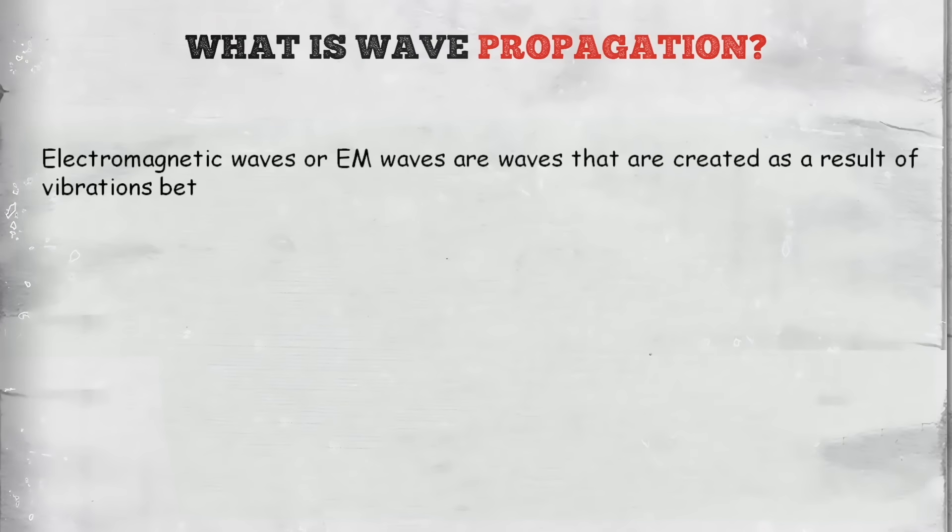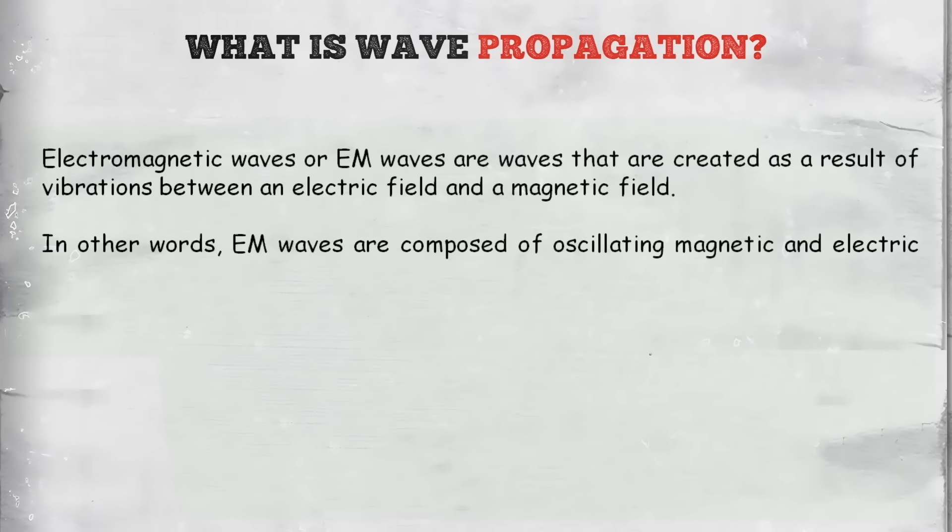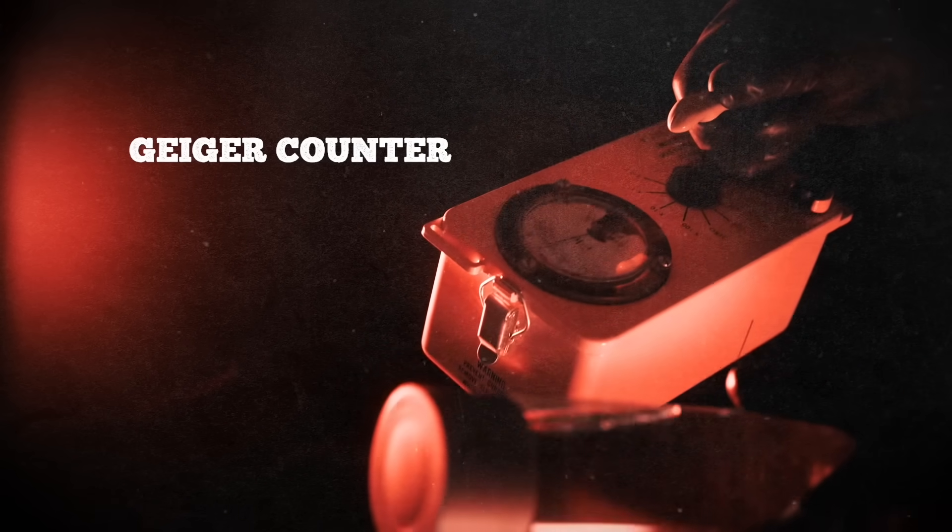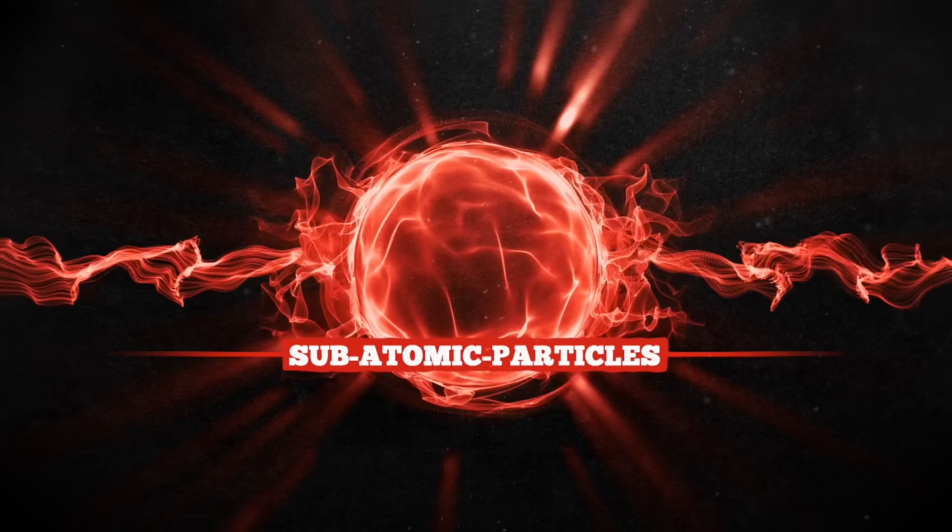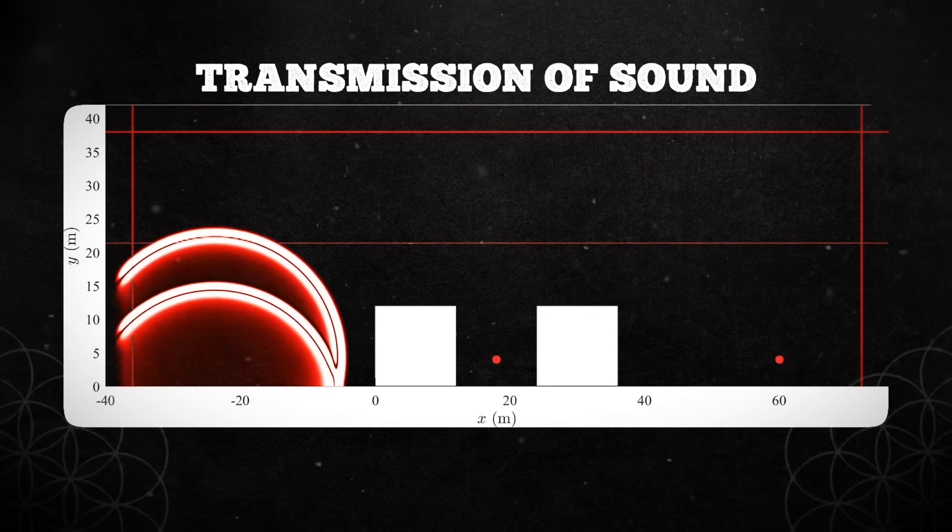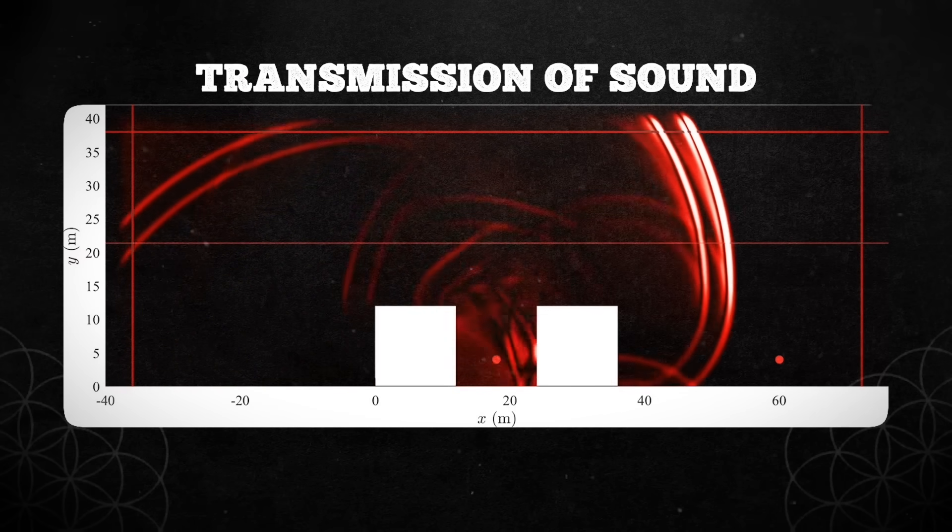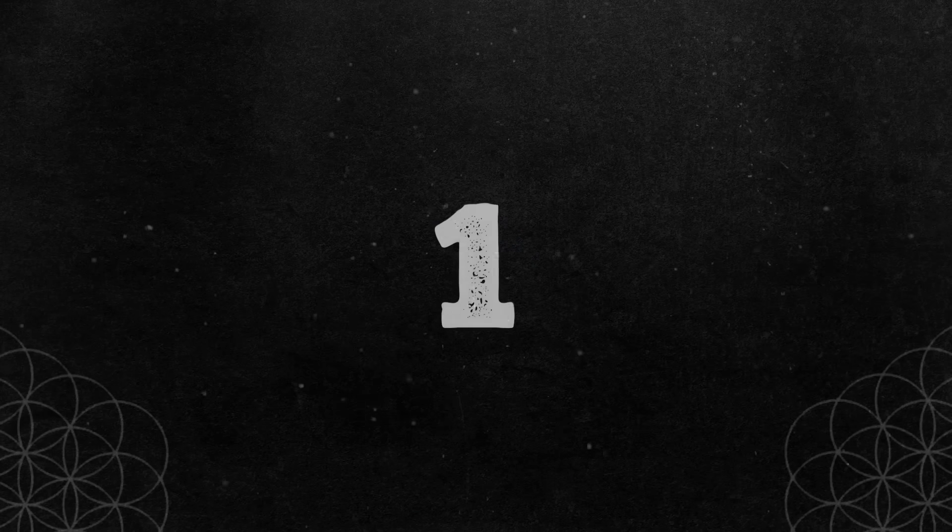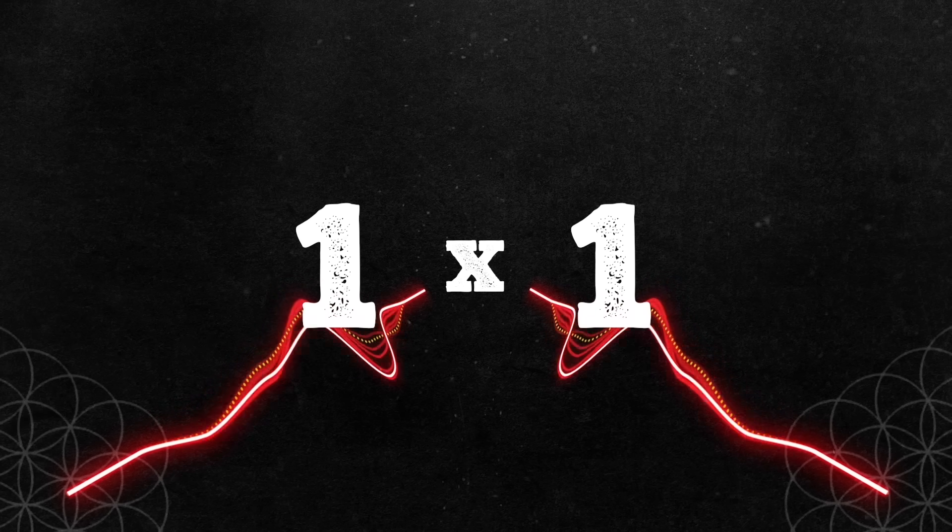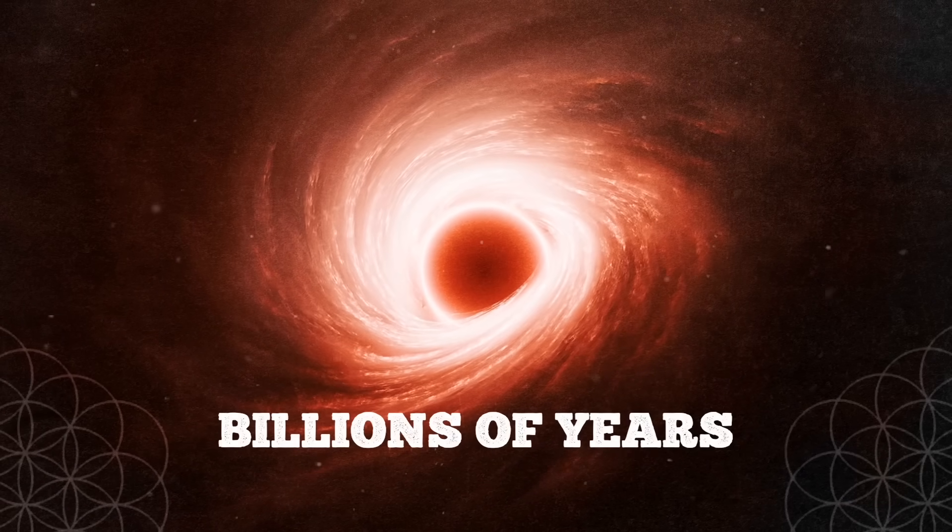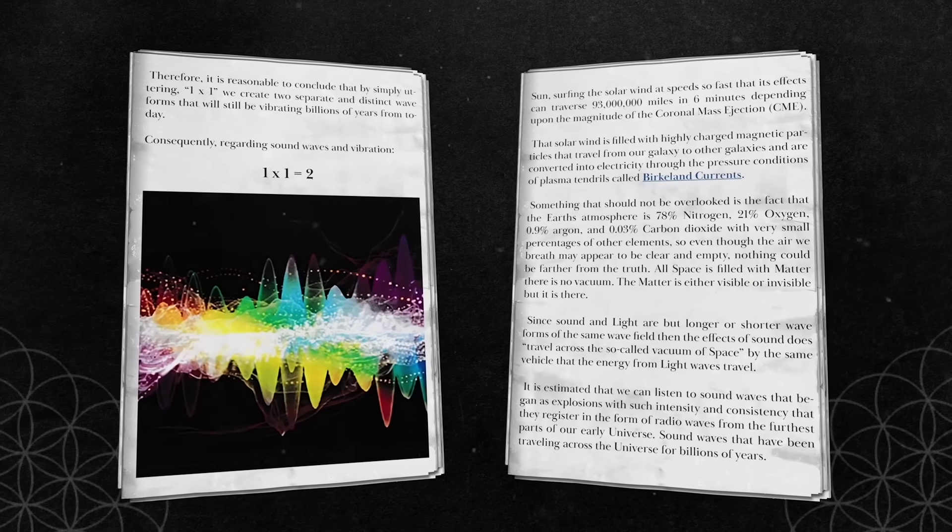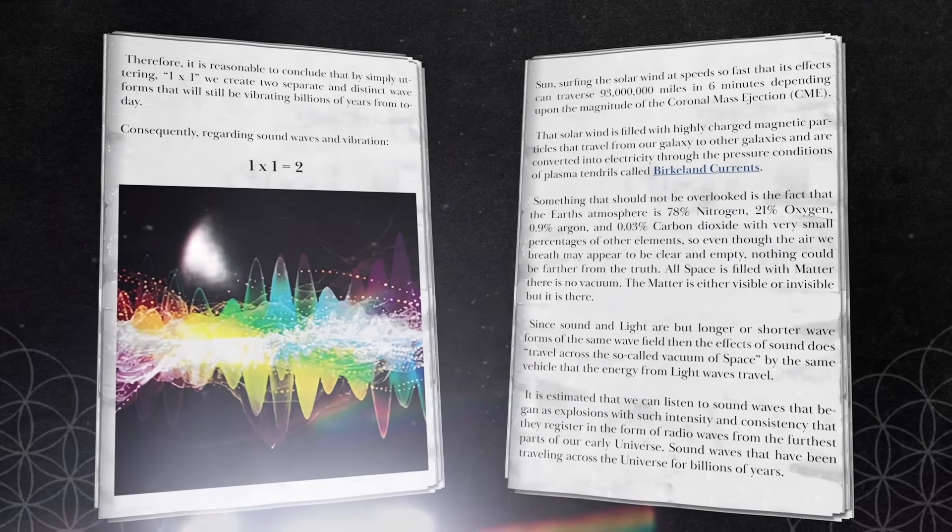In discussing the propagation of sound through space, Terrence critiques the limited vision of modern science, which fails to recognize the field nature of what is perceived as a vacuum. He uses the example of a Geiger counter to illustrate that space, far from being empty, teems with subatomic particles and radiation, thereby facilitating the transmission of sound as variations in electromagnetic fields. Terrence's exploration culminates in the assertion that by simply uttering one times one, we generate two distinct waveforms that will resonate through the universe for billions of years. This idea not only challenges our understanding of sound and light, but also invites us to contemplate the lasting impact of our actions and words on the cosmos.